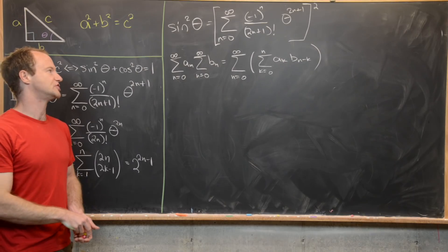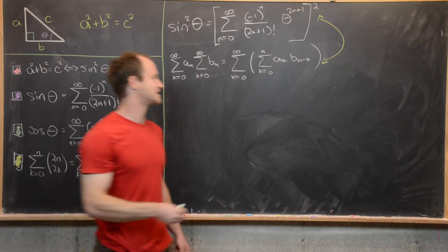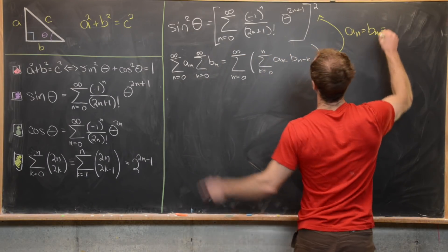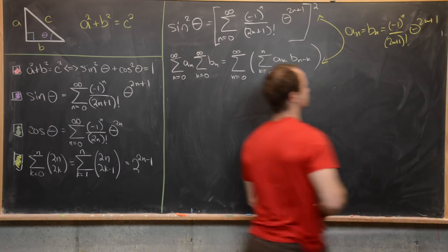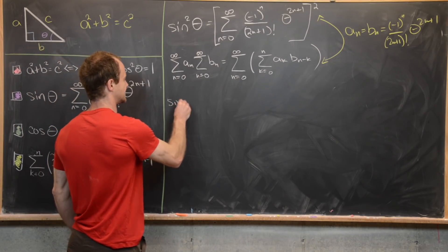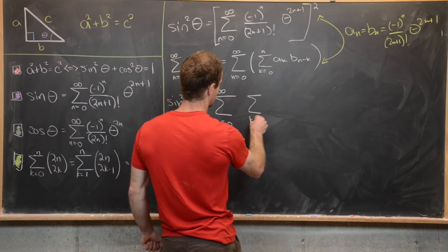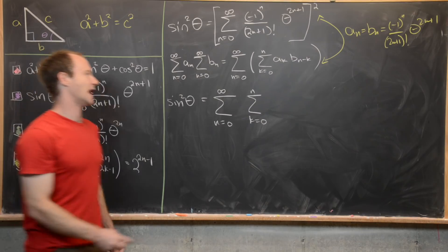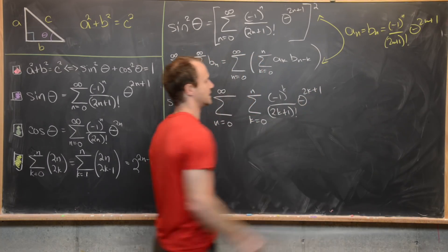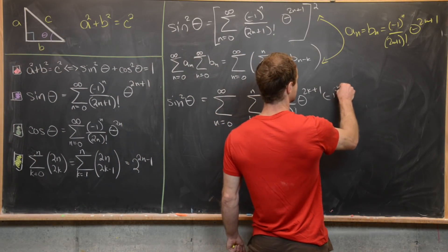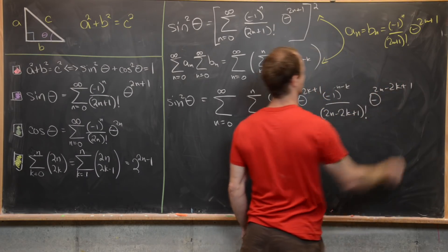Since we're squaring the same series, a_n equals b_n equals minus one to the n over two n plus one factorial times theta to the two n plus one. Applying the Cauchy product, sine squared equals the sum as n goes from zero to infinity of the sum as k goes from zero to n of: minus one to the k over two k plus one factorial times theta to the two k plus one, times minus one to the n minus k over two n minus two k plus one factorial times theta to the two n minus two k plus one.